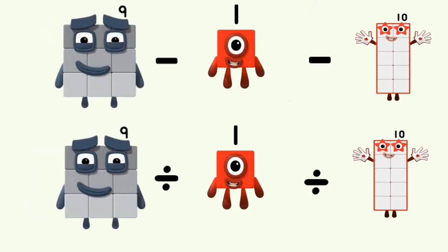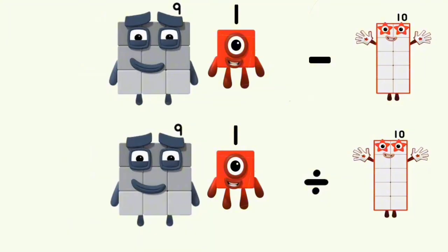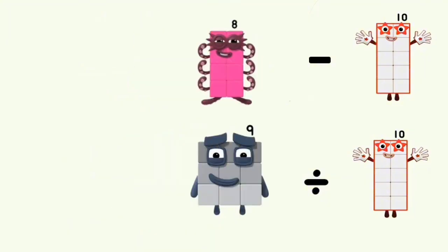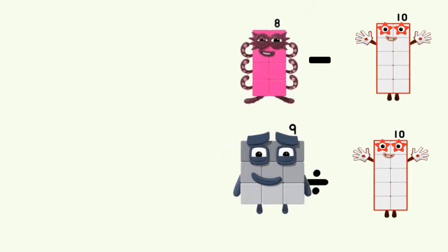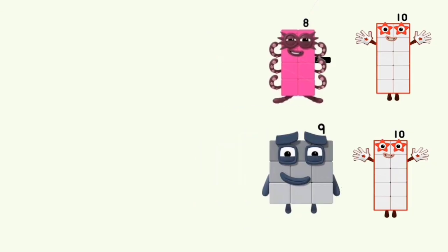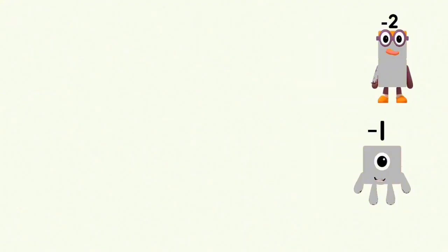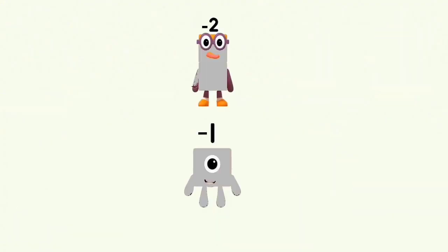9 minus and divided by 1 equals 8 and 9. 8 minus 10 and 9 divided by 10 equals negative 2 and negative 1.